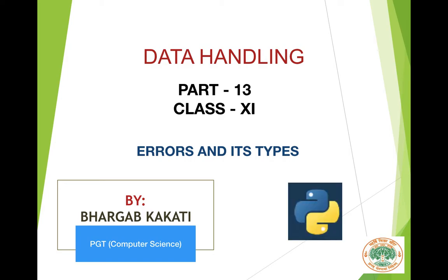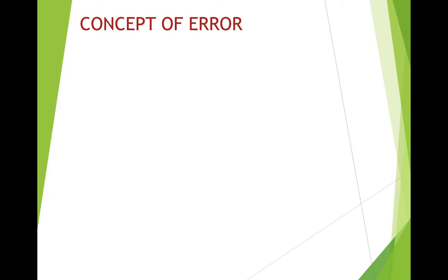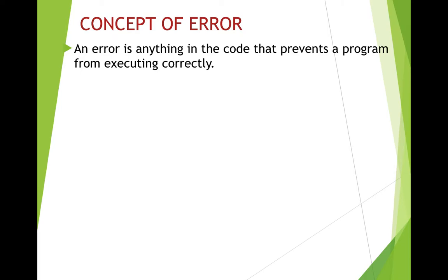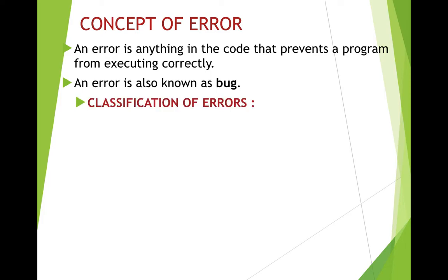Let's begin with the concept of error. When you write a program in Python or any programming language, you expect your program to run correctly without any mistake and you should get the desired output. But if you make some mistake in the program, or if your computer is having some problems, then you might not get the desired output or any output at all. These situations are referred to as errors. Formally, an error is anything in the code that prevents a program from executing correctly. An error is also known as a bug.